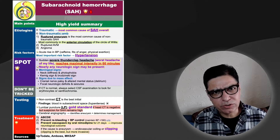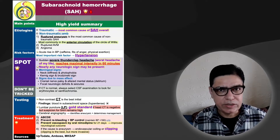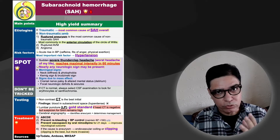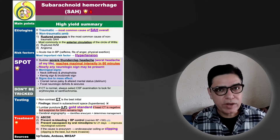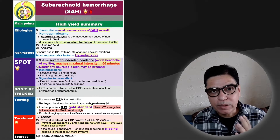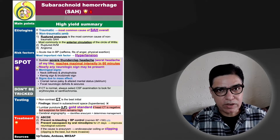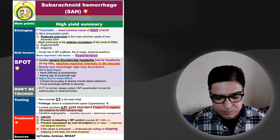That is why subarachnoid hemorrhage is considered an important entity not to be missed. As mentioned, it is not very common, but it is very important — so even if it is uncommon, you would never like to miss it.